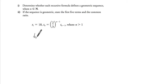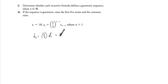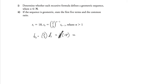Let's find t2. t2 is (2/3) to the power of 2 minus 1, and then t1. So this is 2/3 times by 18 — the common ratio times by the first term. So this gives us 12. Let's try a few more.